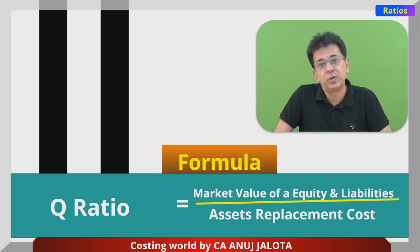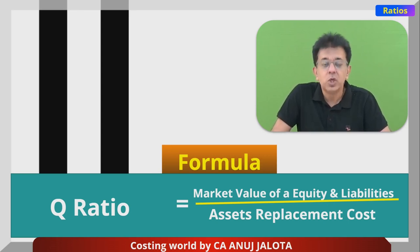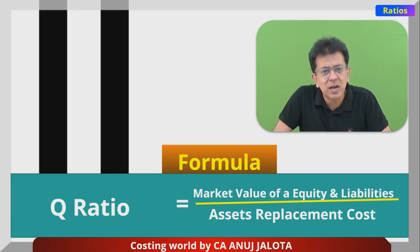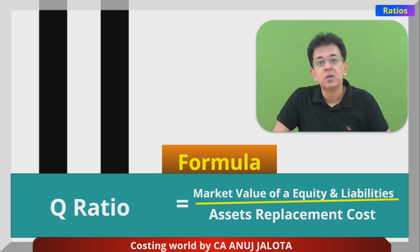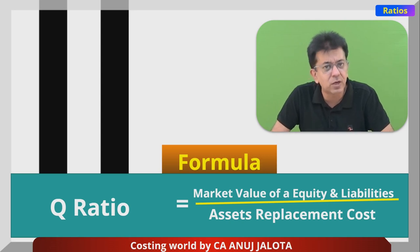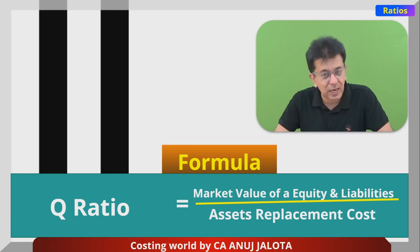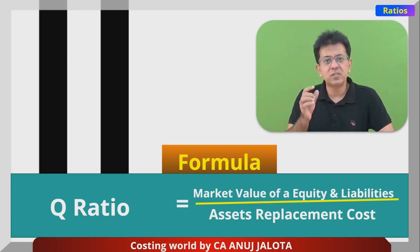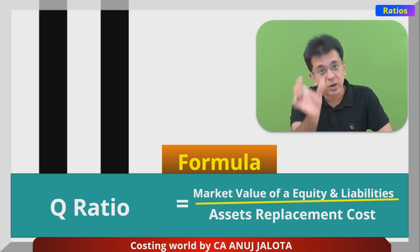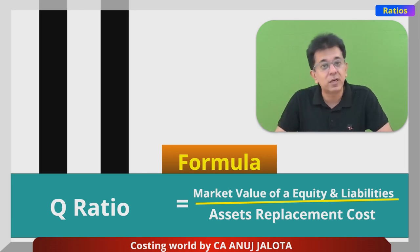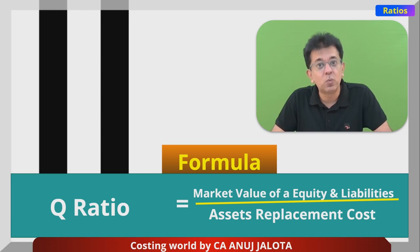The denominator is asset replacement cost. Suppose you purchased a machine for 5 lakh rupees 3 years ago, but the same kind of machine now costs only 2 lakh rupees — so you write 2 lakhs in the denominator because the replacement cost has fallen. Conversely, suppose you purchased land for 20 crore rupees a few years ago. Replacement cost means whatever it costs to replace that asset today, so you take whatever amount you'd have to pay now to acquire similar land.